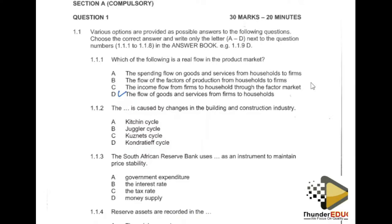Moving on to question 1.1.2, it reads: the dash is caused by changes in the building and construction industry. The key concepts here include 'construction industry' — an industry refers to a group of firms that sell the same product or the same goods and services. We have different types of business cycles, and you should always understand the meaning of business cycles before jumping to answers.